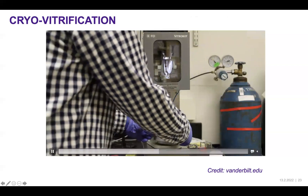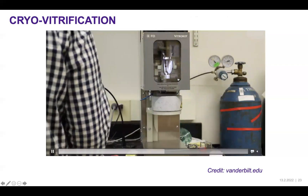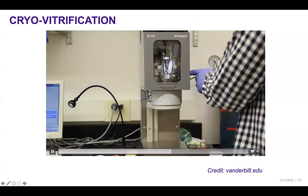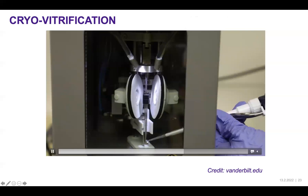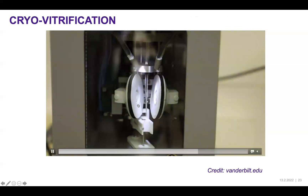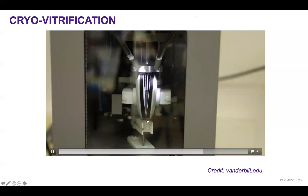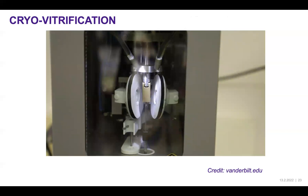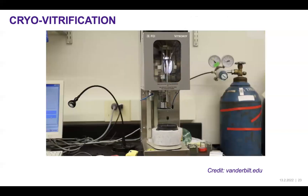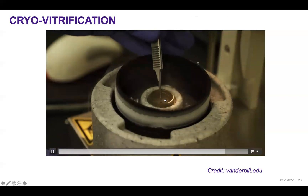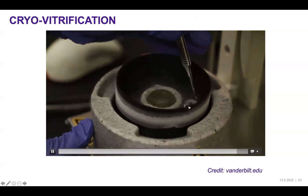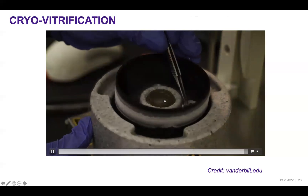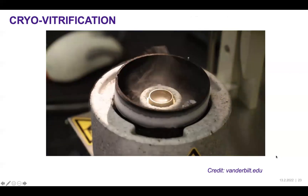You load about two to three microliters of sample to the grid. Everything is controlled by computer and you quickly blot the sample, which leads to a 70 to 100 nanometer thick ice film. You then rapidly plunge it — this entire process is called plunge freezing. The grid is then transferred from liquid propane to liquid nitrogen for storage. Once the amorphous ice is formed it is stable as long as the temperature is maintained.